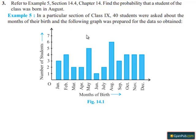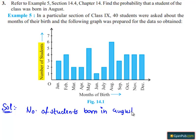The bar graph is given. Moving on to the solution, from the graph, number of students born in August equals to 6.